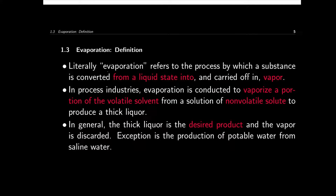Literally, evaporation refers to a process by which a substance is converted from a liquid state and carried off as vapor. So in process industries, evaporation is conducted to remove a portion of the volatile solvent from a solution of non-volatile solute. The purpose is to produce a thick liquor — so this final maple syrup is a thick liquor of the sap.